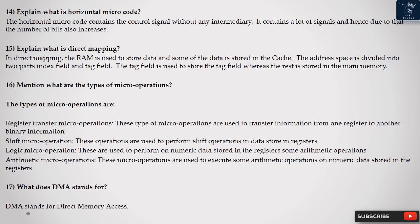Question 16: Mention what are the types of microoperations? The types of microoperations are: Register transfer microoperations, these type of microoperations are used to transfer information from one register to another binary information.